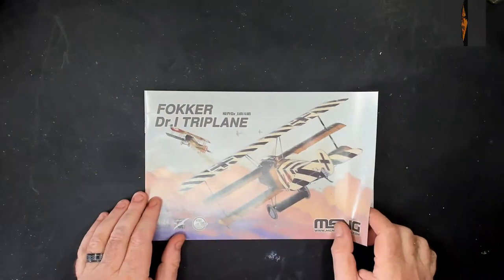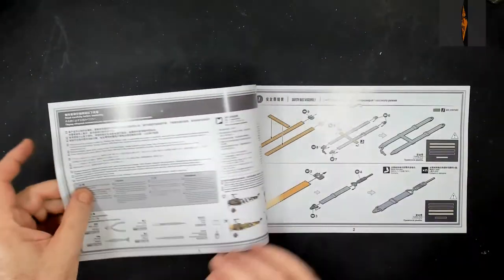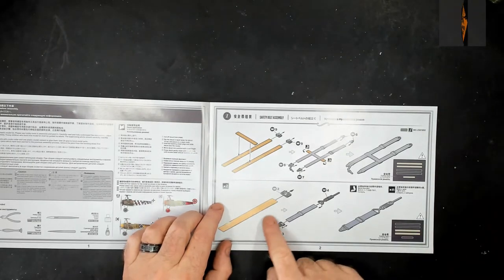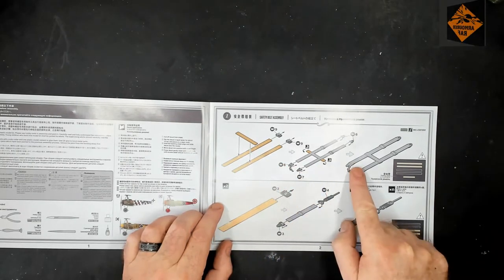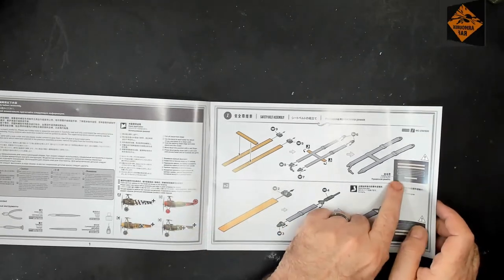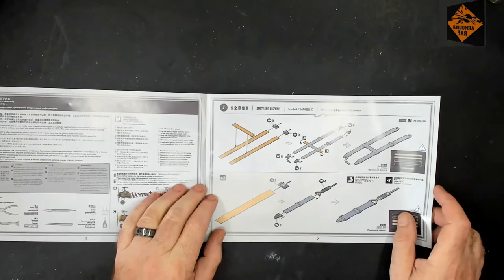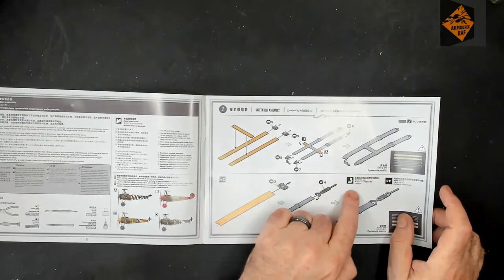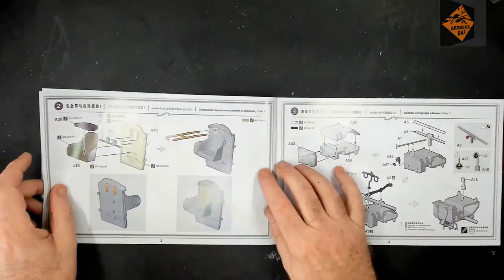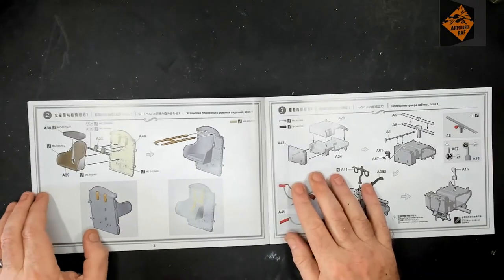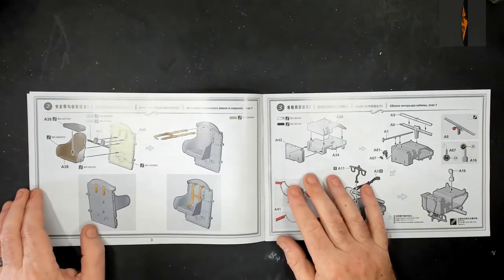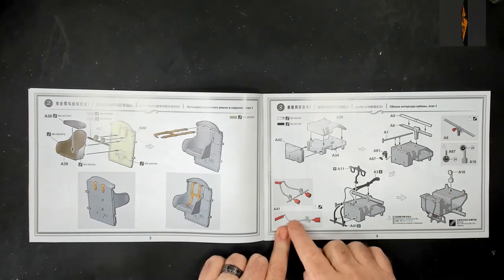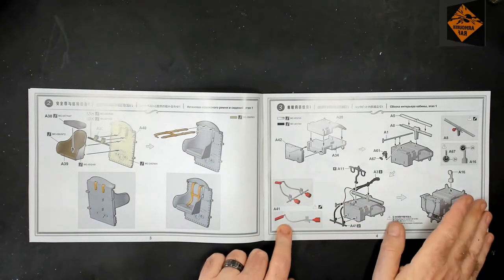So I lied, not the sprues yet - the booklet. Safety belt assembly, looks like you've got some safety belts in here. Probably be cloth or whatever they make them out of, so now not having to cobble together some or using masking tape. Really, really good.